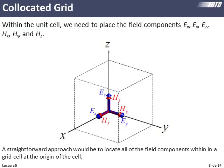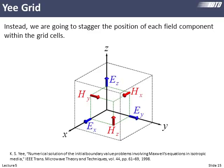We're going to stagger the position of all six field components at different points. This was first discussed by Yee in his famous paper. While it may appear initially complicated, it actually makes our finite difference equations simpler and has other numerical advantages. This is really how finite differences in electromagnetics is done — whether time domain or frequency domain, it's always done on some kind of Yee grid, with very few exceptions.